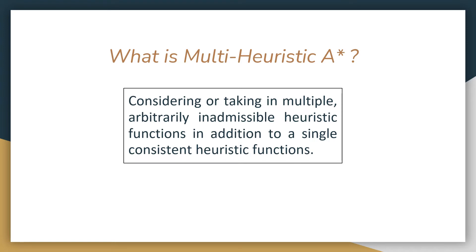Here I repeatedly use the terms admissible and consistent. A heuristic function is said to be admissible if it never overestimates the cost of reaching the goal — that is, the cost it estimates to reach the goal is not higher than the lowest possible cost from the current point in the path. A heuristic function is said to be consistent if its estimate is always less than or equal to the estimated distance from any neighboring vertex to the goal plus the cost of reaching that neighbor.